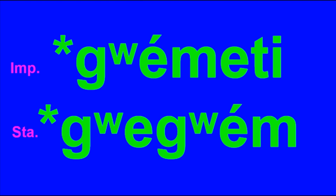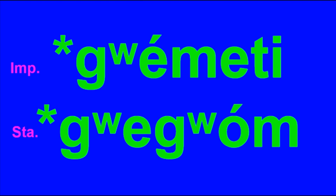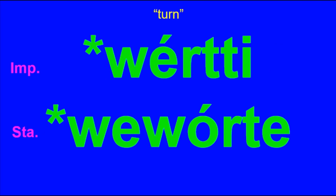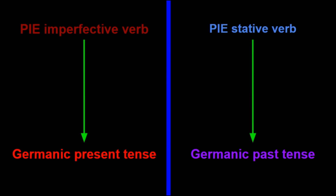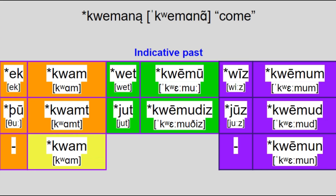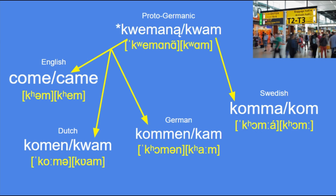This change would be accompanied by the original E vowel in the root switching to O. For two examples: there was the PIE imperfective verb for 'come', *gwemeti, which became *gwegwome in the stative; and there was also the PIE imperfective verb meaning 'turn', *wierti, which became *weworte in the stative. The imperfective became the Germanic present, and the stative became the Germanic past. Using our two examples: *gwemeti became Proto-Germanic *kwemaną, while its past tense form for third person singular was *kwam — leading to English come vs. came, Dutch komen vs. kwam, and Swedish komma vs. kom, among other languages.